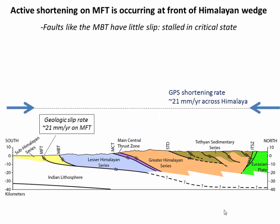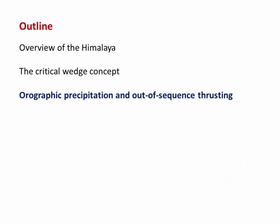This is exactly what's happening in the Himalaya. Looking at our critical wedge, we have four major fault systems, most of which are relatively inactive, and all of the shortening is accommodated on the main frontal thrust. That's because it's the youngest thrust — the one that just broke out at the front of the wedge — and it can slip more easily because it has less overburden on top of it. In contrast, the main boundary thrust just to its north is essentially extinct, probably sitting at a critical state.